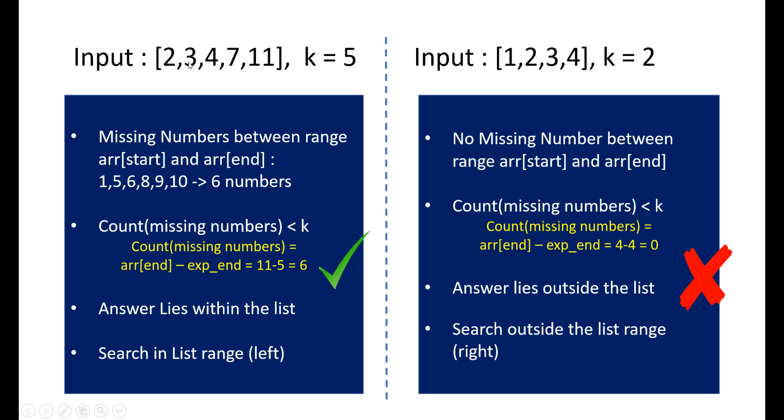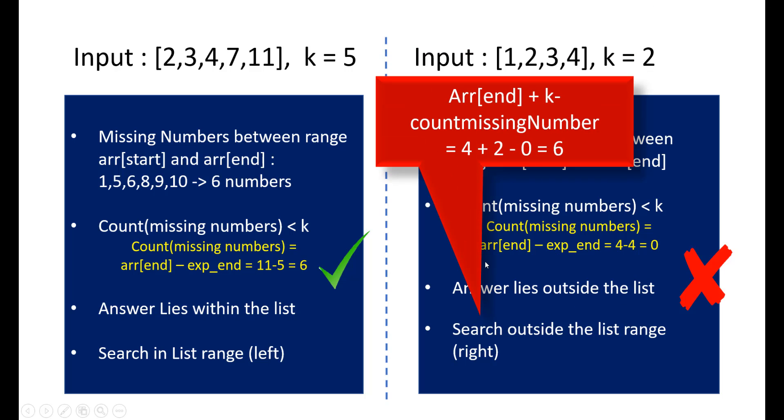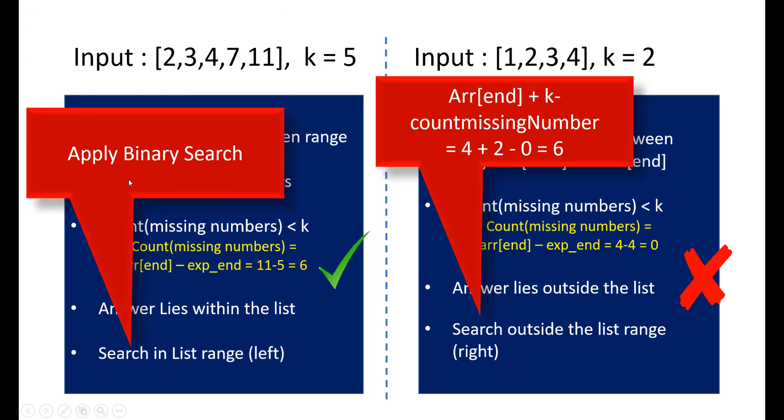In the second example, we see that there are no numbers missing in this range and we are given k equals 2, so the answer would lie outside this list. In this case, we can give the answer directly by saying that the answer would be the end element plus k minus the numbers that are missing at this point. So here the answer becomes 4 plus 2, which is 6.